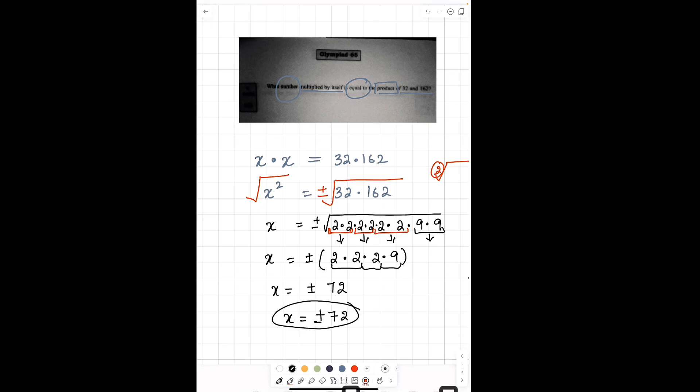Now you should go ahead and check your answer by yourself. Check how much is 72 times 72, positive 72 times positive 72, and negative 72 times negative 72. Then check if it is same as 32 times 162. Leave your answer in the comment section.